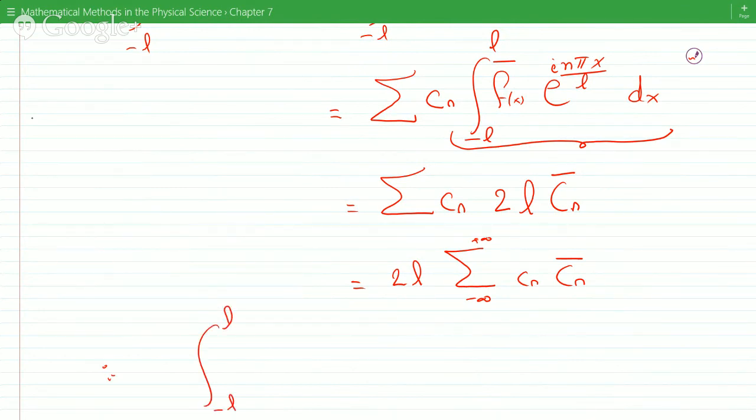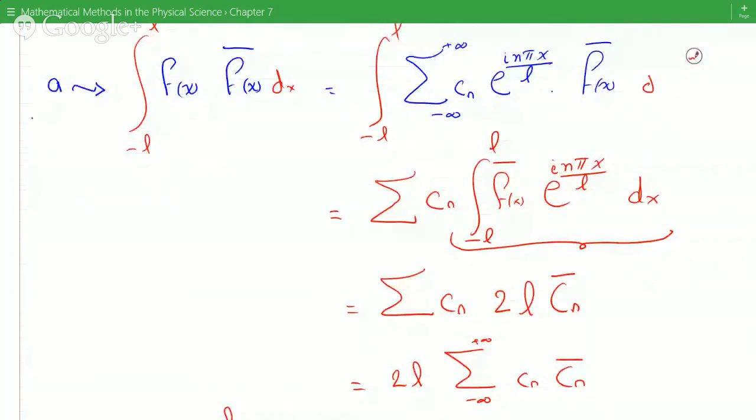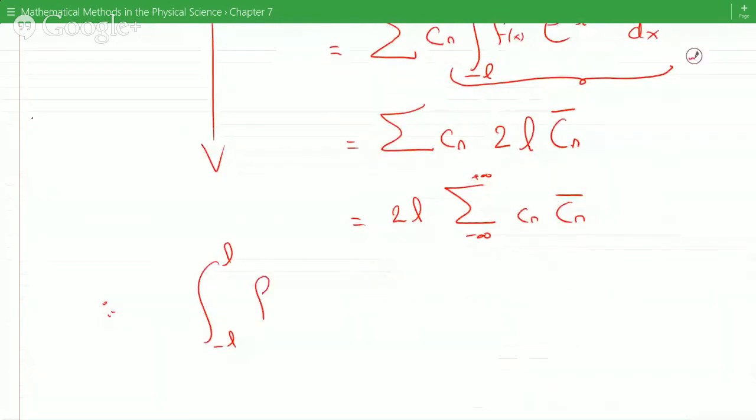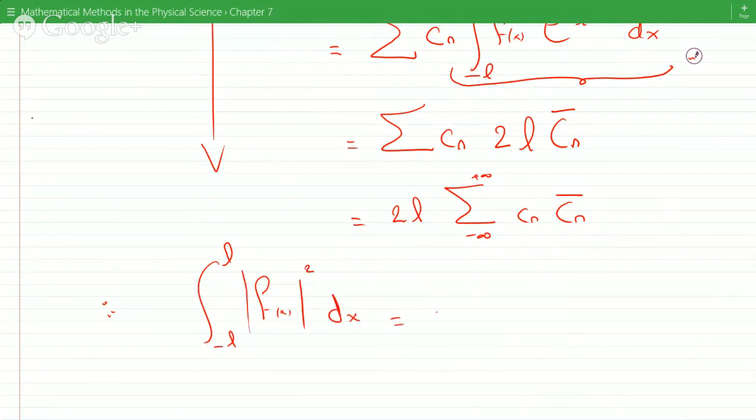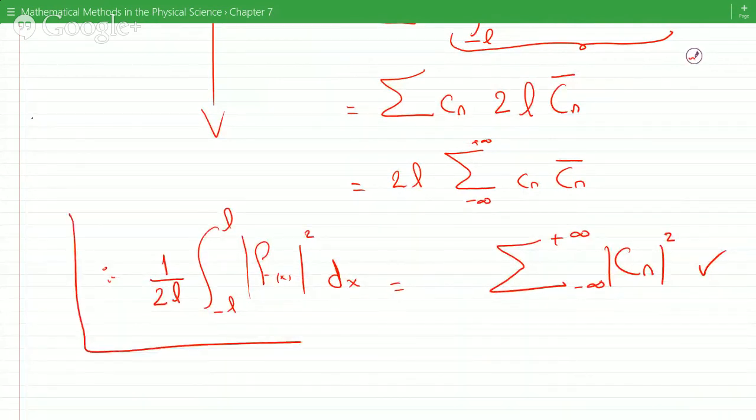minus L to L, oh there's a dx here, of course there's a dx here. So this will just give us minus L to L of F(x) squared dx will just equal to 2L times the summation minus infinity to infinity of C_n squared. And I could just take this 1 over 2L and divide it on here, and we will get the result.